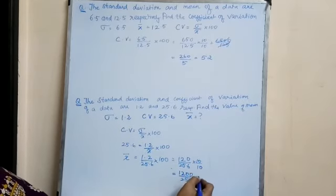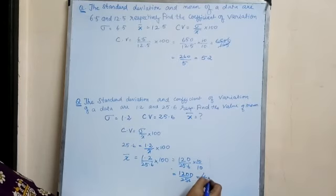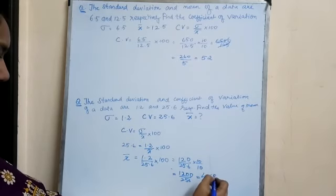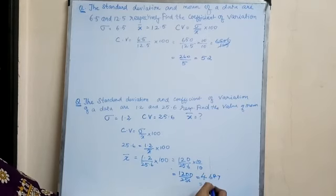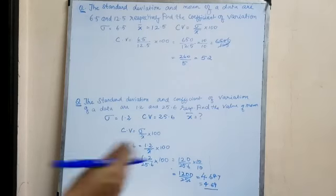When we cancel it we will get 4.687. So that will give you 4.69 approximately. Thank you.